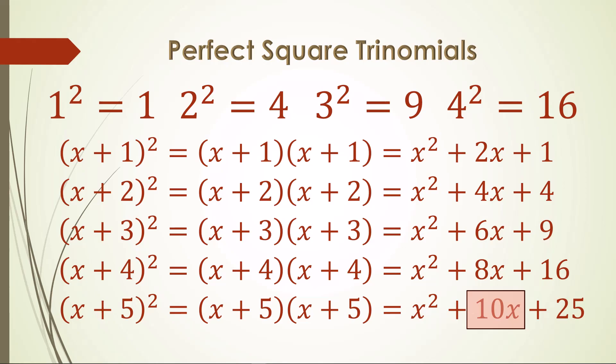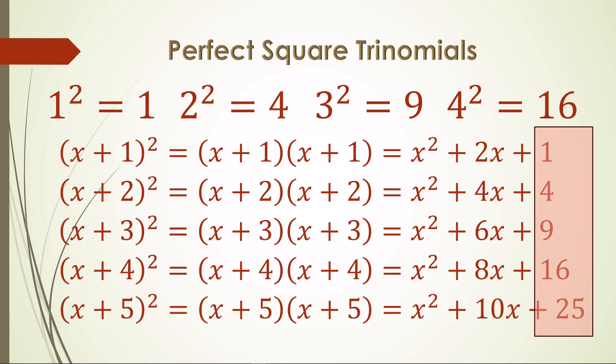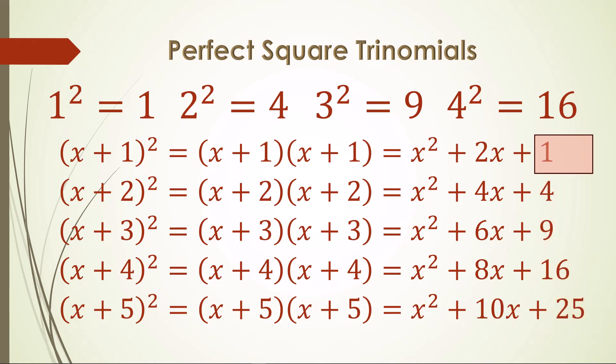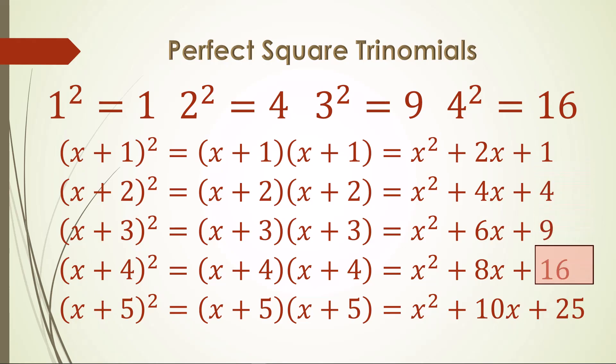Now look at the third term of each trinomial. What is the pattern there? Simple — it is the square of the constant of each binomial. 1 squared is 1, 2 squared is 4, 3 squared is 9, and so on.